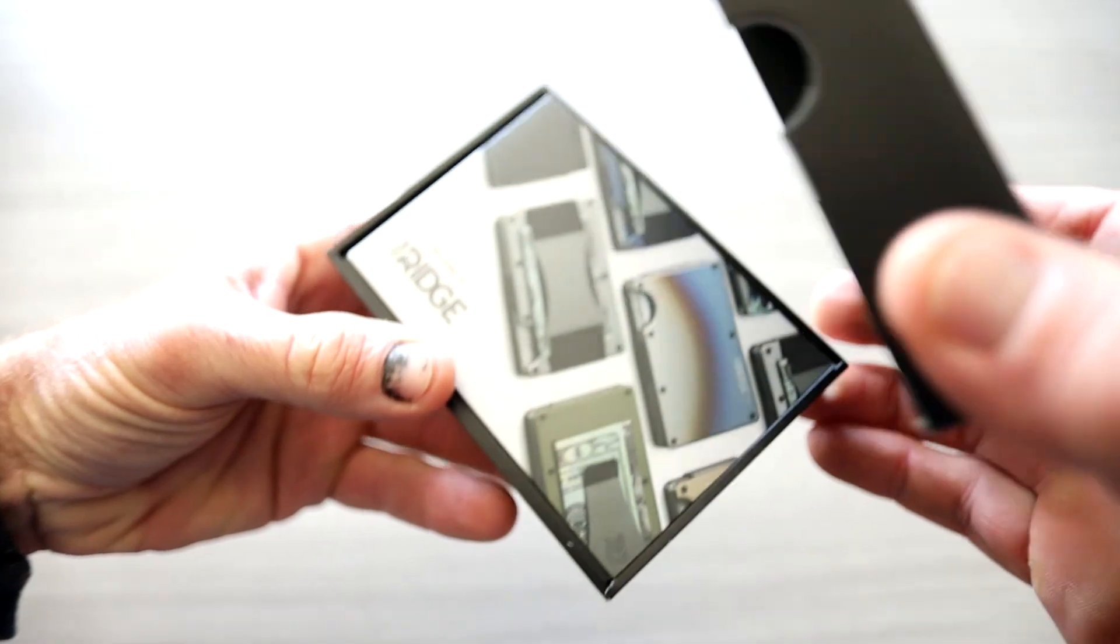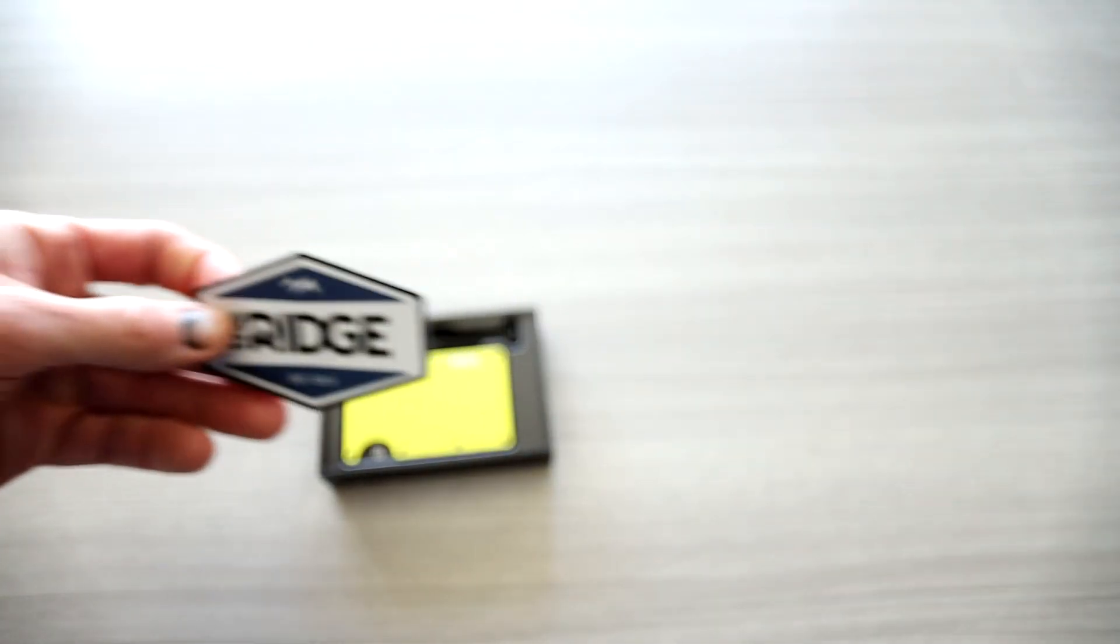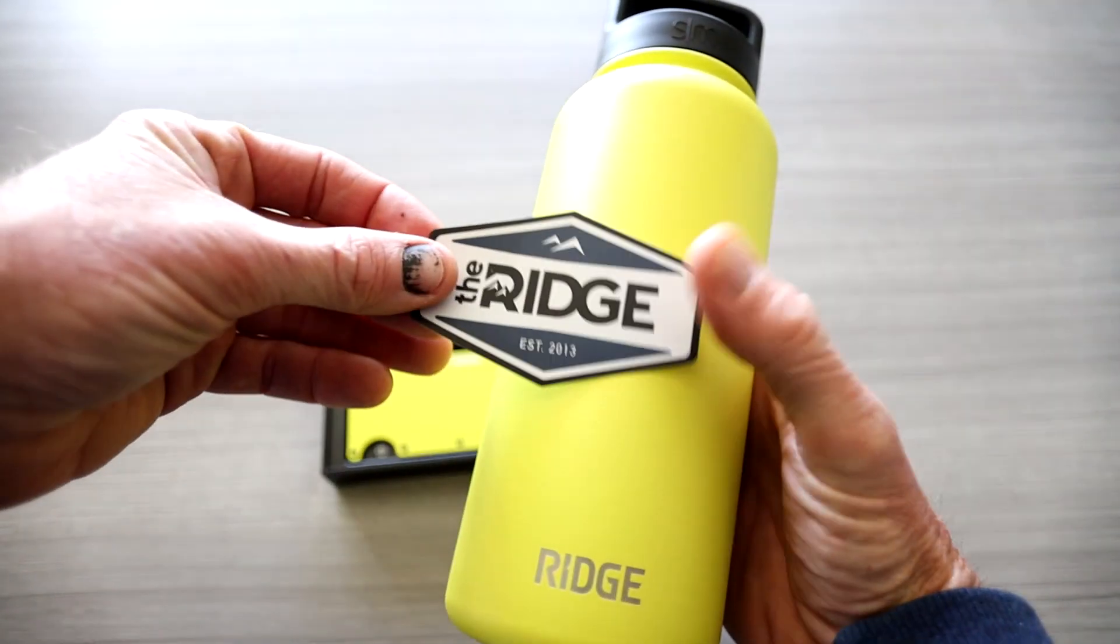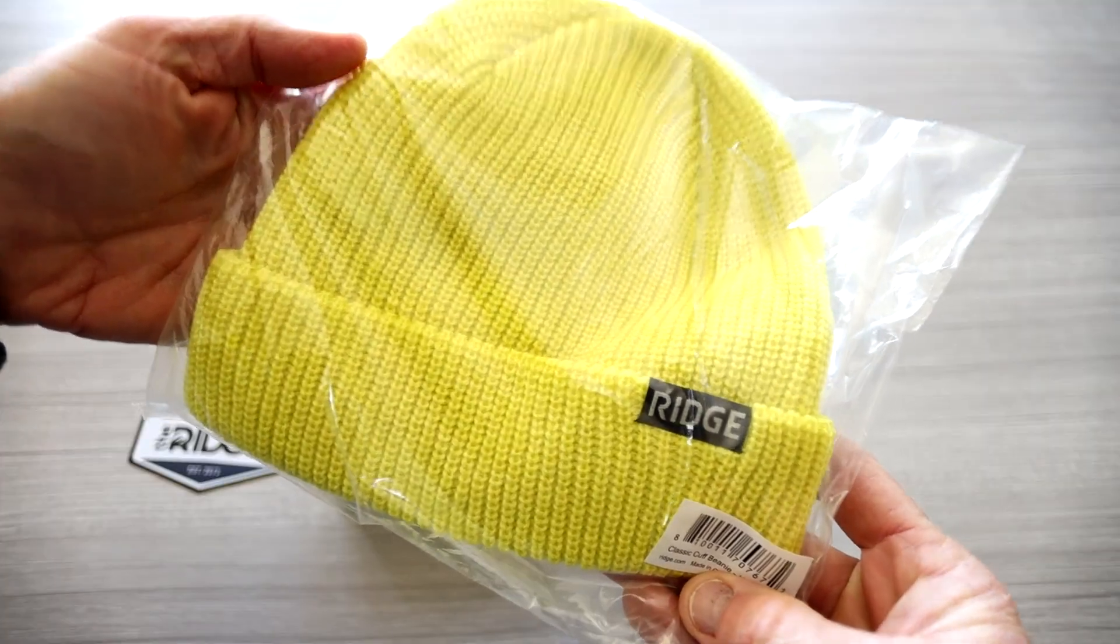Let's see what we got. Opening this sucker up, our little welcome card sticker as always, where you can slap that on. I almost forgot to mention, I got myself my Hyper Lime Ridge water bottle as well, and you can slap that right on there. And also, the Ridge Hyper Lime beanie.